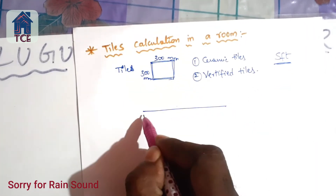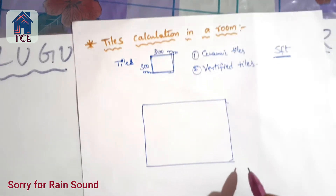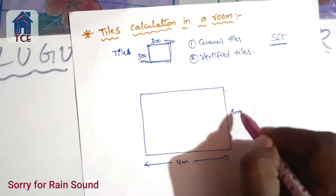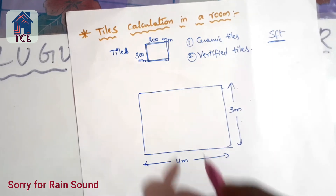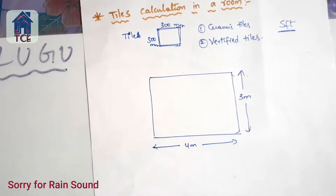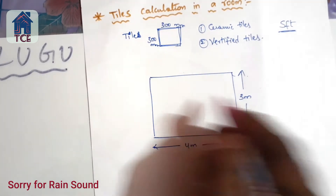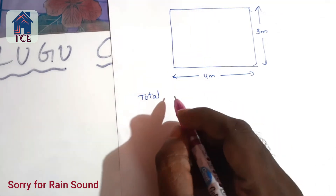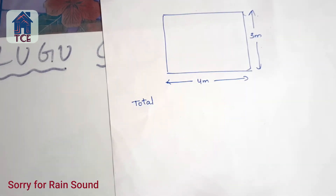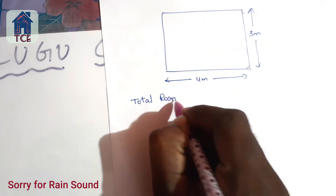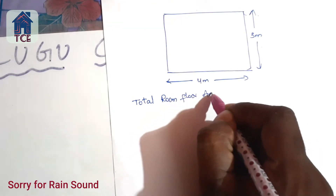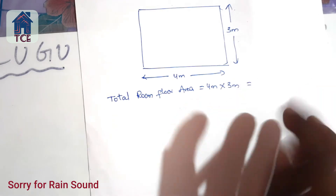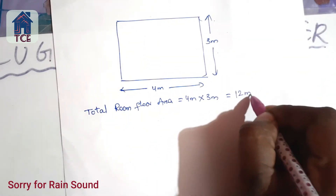Let's assume an area. This is a room — 4 meters by 3 meters. This area represents the bedroom and the hall. Total room floor area: length into breadth, 4 meters by 3 meters, equals 12 square meters.